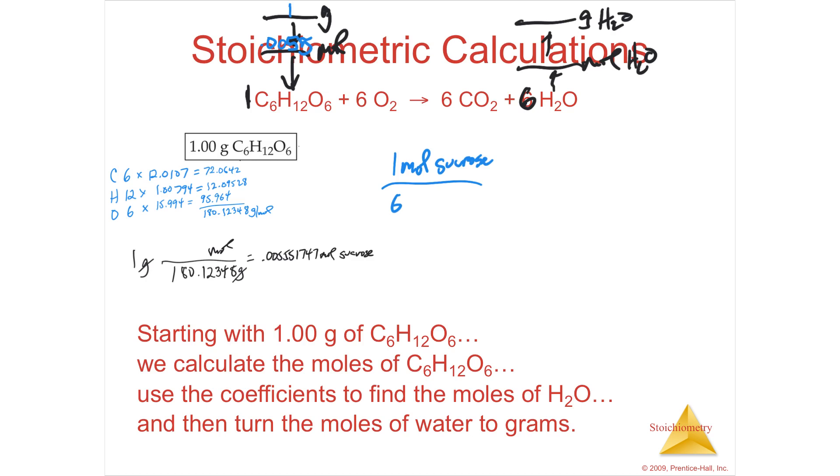I can say that 1 mole of sucrose is to 6 mole of water as, okay, I've got sucrose on top, water on the bottom. I'm going to do it again. 0.005551747 moles of sucrose to x moles of water. Now I've got a ratio. I've got a cross-multiply thing.